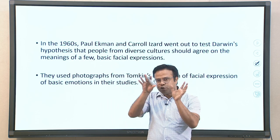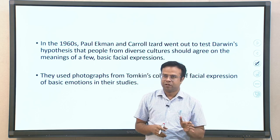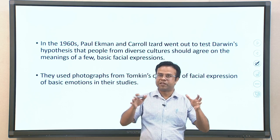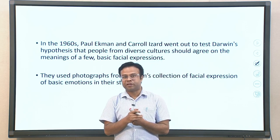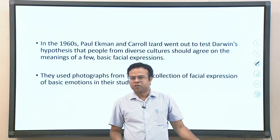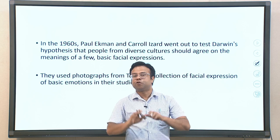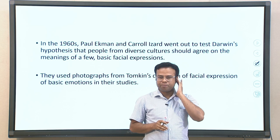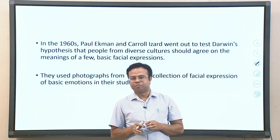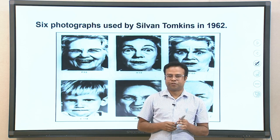In the 1960s, the universalist perspective gained momentum again through the research of Paul Ekman, Carroll Izard, and other basic emotion theorists, who went out to test Darwin's hypothesis that if something is evolutionary and adaptive — biologically driven — it should be the same across cultures. They used photographs from Silvan Tompkins' collection of facial expressions of basic emotions.